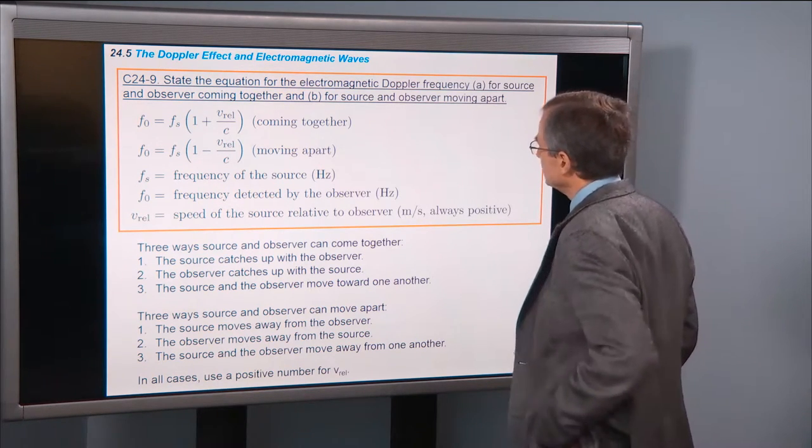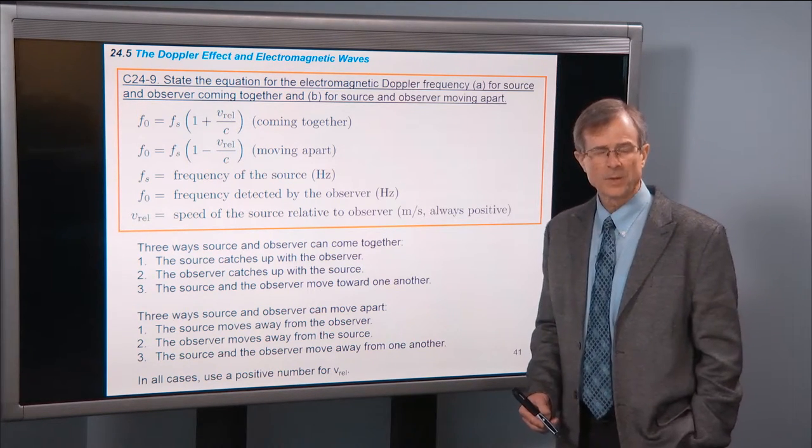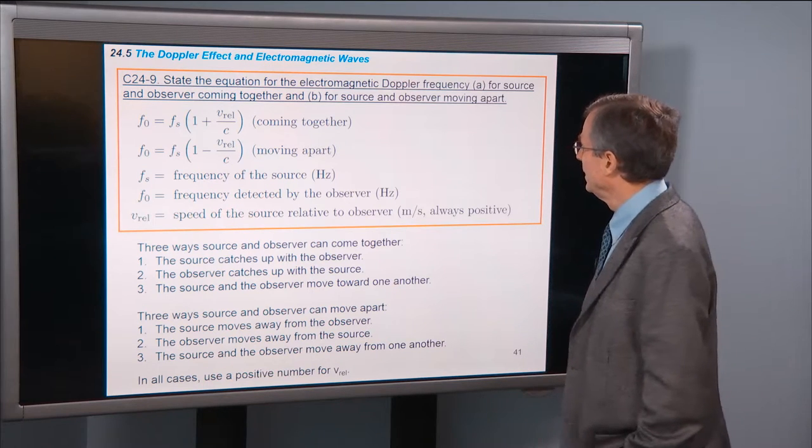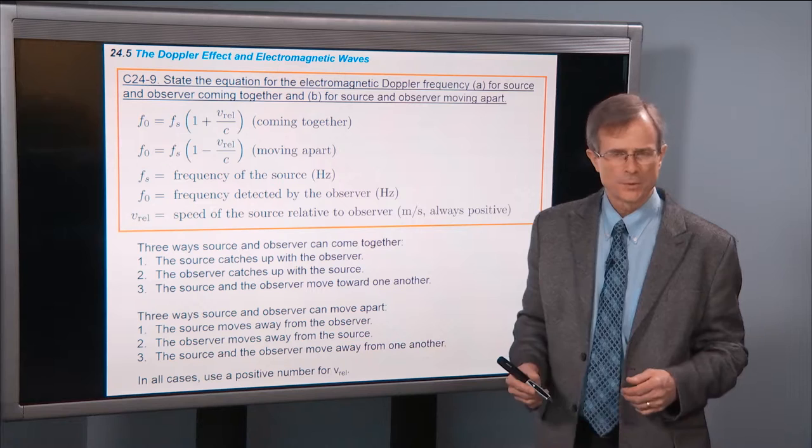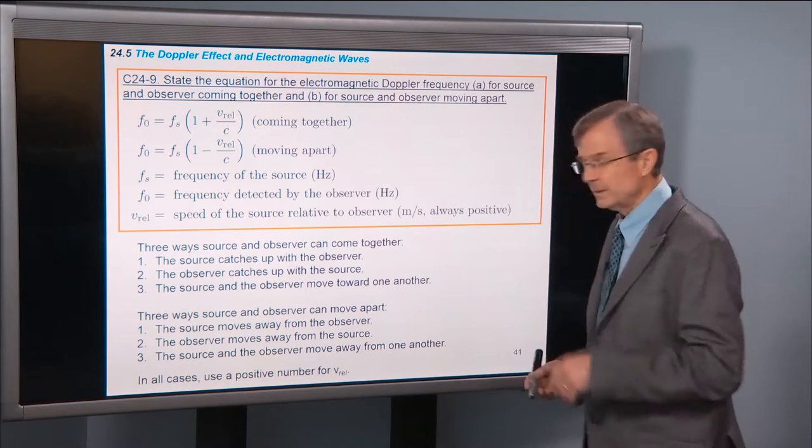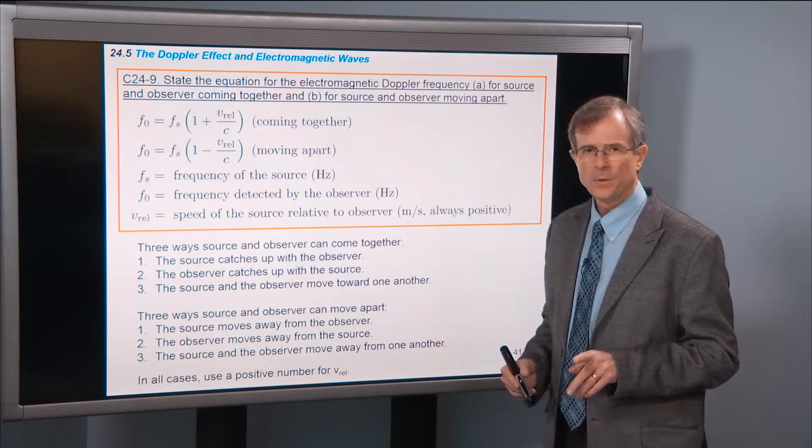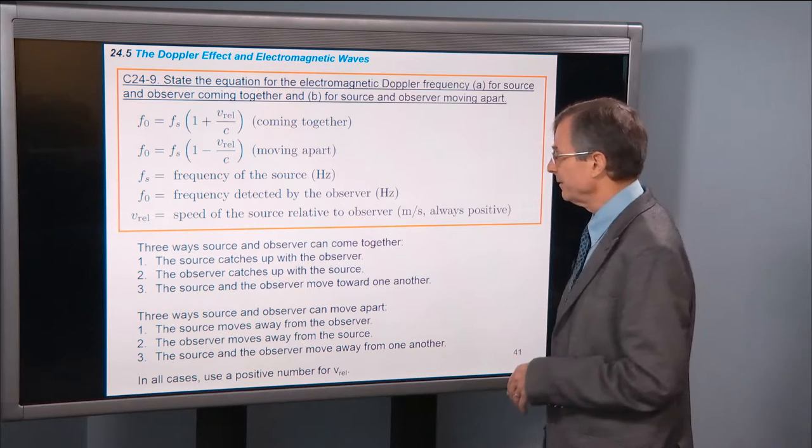The equation for the electromagnetic Doppler frequency is different from the one we had for sound. Why? Sound requires a medium to propagate through air or a solid or a liquid. Light does not require a medium. It propagates through nothing. It's just electric and magnetic fields.